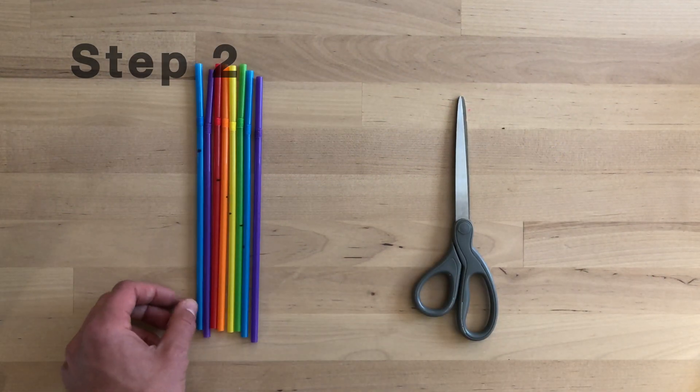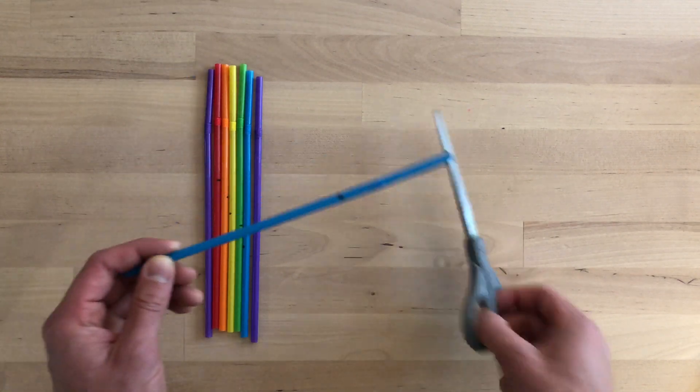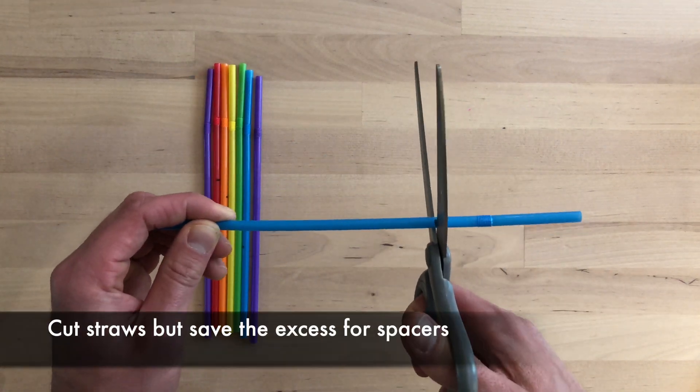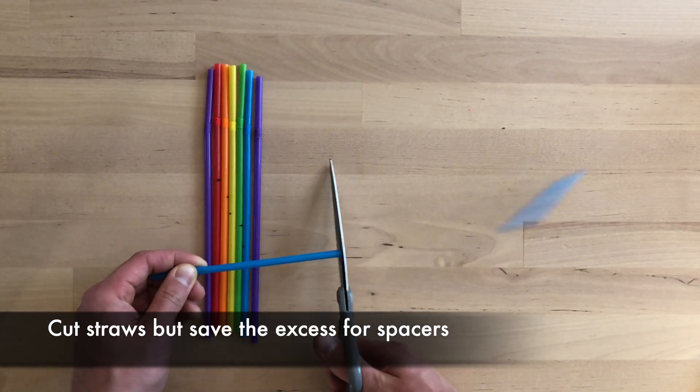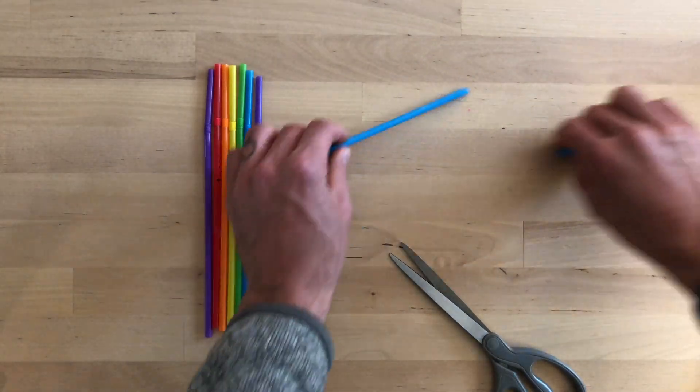Step two. Now we need to cut our straws. You're going to cut on the lines you just drew, but save the excess. We will use those for spacers in between our notes.